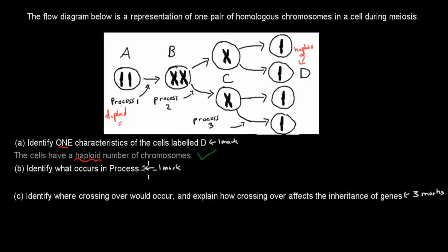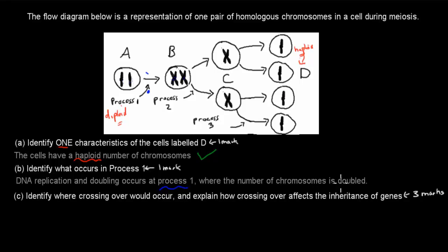Next is identify what occurs in process 1. Process 1 was right here. Here we have our chromosomes, and you can see they've obviously doubled. So this process 1 must be to do with doubling. DNA replication and doubling occurs at process 1, where the number of chromosomes is doubled. So because of the DNA being replicated, the number of chromosomes doubles. And that's also worth a mark.